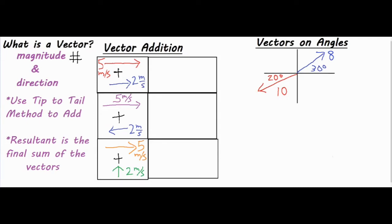The direction is shown with an arrow or in words such as right, left, north, or south. The way you add vectors is something called the tip-to-tail method: at the tip of one vector is where the next one starts. The resultant is the final sum — it goes from the very beginning of your first arrow to the tip of your very last one.